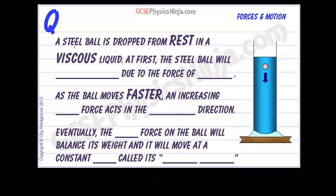Here we have a steel ball dropped from rest in a viscous liquid. This could be glycerin, which is a sticky liquid. Viscous means a liquid that doesn't flow very well. For example, imagine a swimming pool of honey - that would be very viscous and quite difficult to wade through.